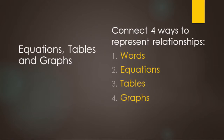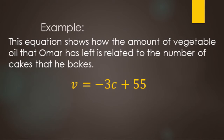In this video, we're going to go over two examples that show different ways of representing relationships in math: words, equations, tables, and graphs. For this first example, the equation V equals negative 3C plus 55 shows the amount of vegetable oil remaining after baking C number of cakes.